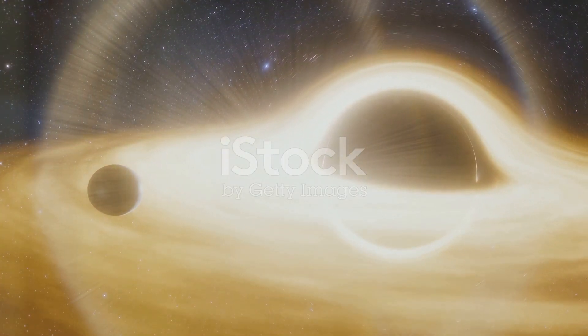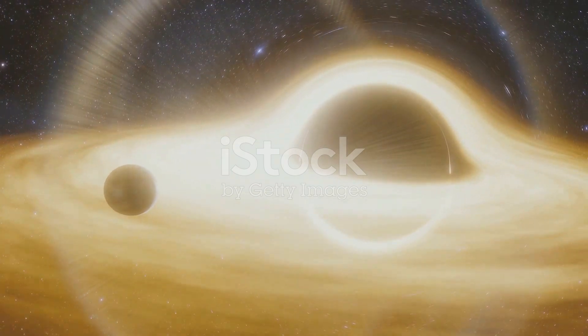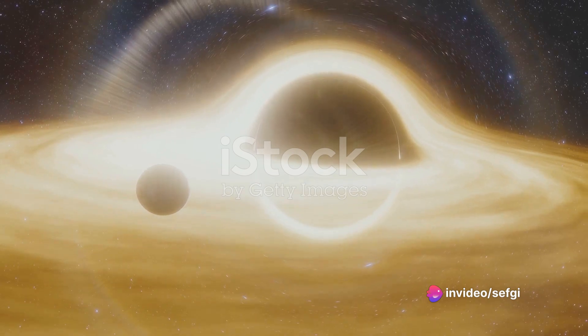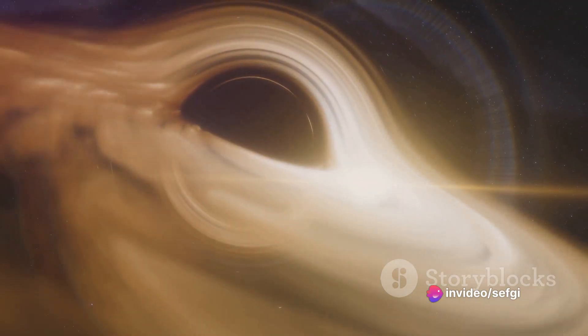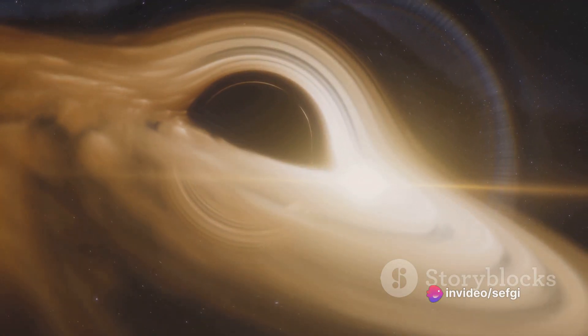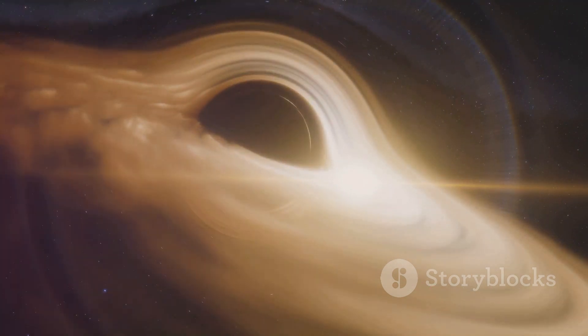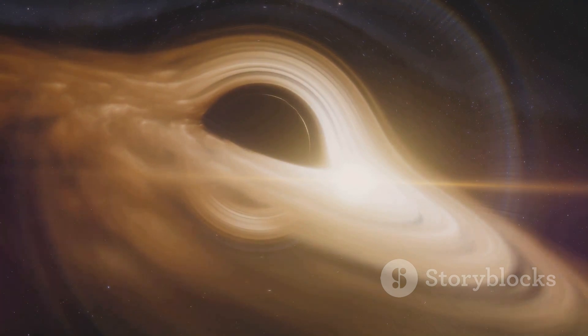The gravitational pull of a black hole is so immense that it warps the very fabric of space and time around it. Imagine throwing a pebble into a pond. The pebble creates ripples that distort the surface of the water. In much the same way, a black hole distorts the space-time continuum, pulling everything towards it.